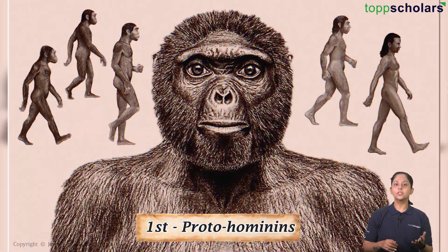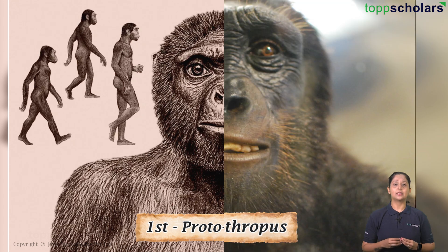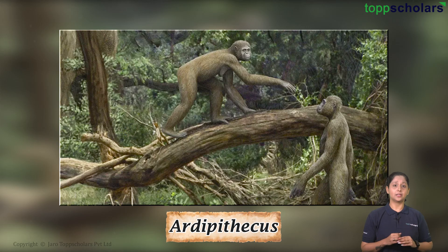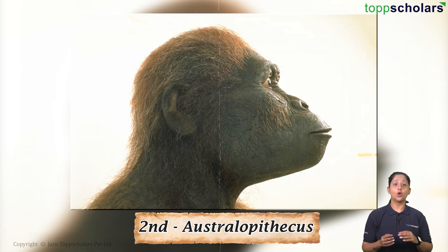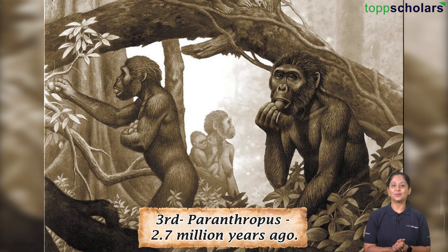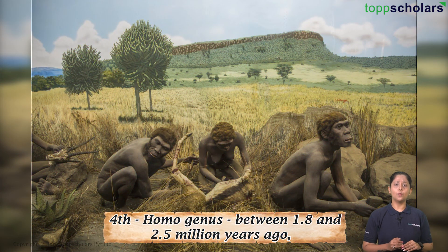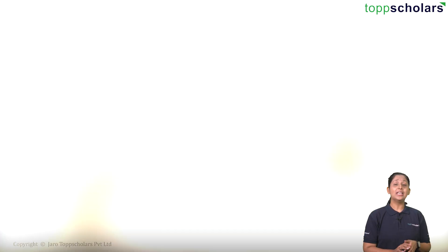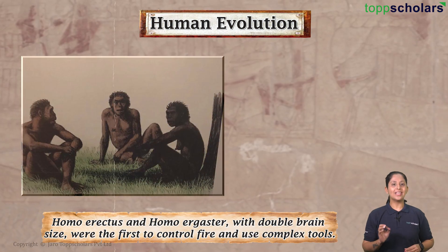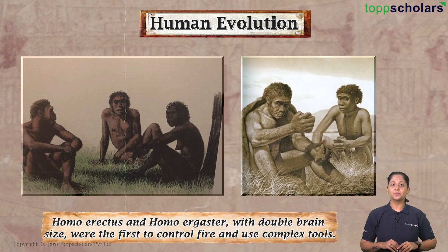Human evolution occurred in four stages: the first involving the proto-hominids, the second involving Australopithecus, the third involving Paranthropus around 2.7 million years ago, and the fourth stage of Homo genus, which existed between 1.8 and 2.5 million years ago. This includes the early hominin Homo habilis, which used stone tools, Homo erectus, and Homo ergaster.